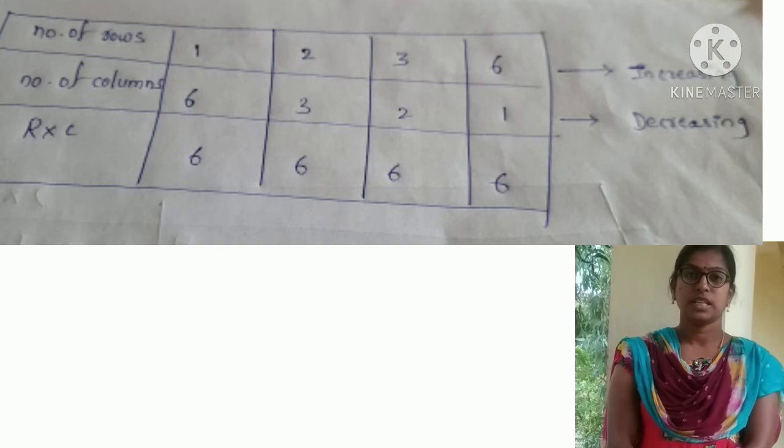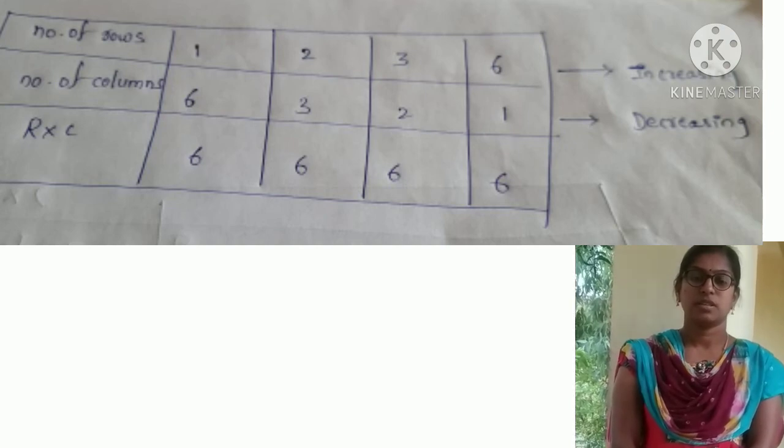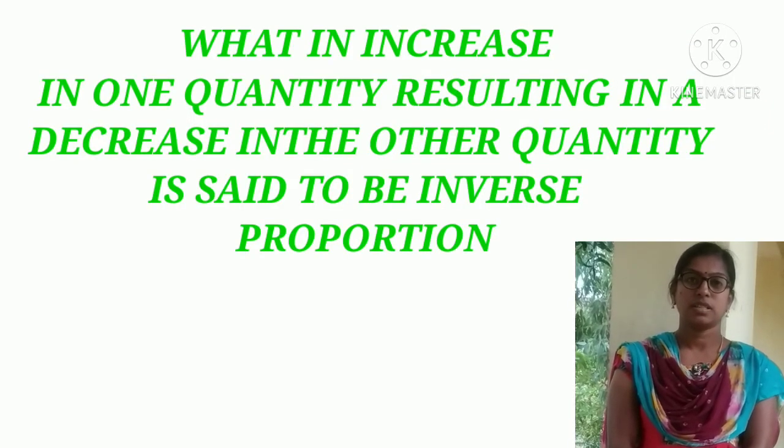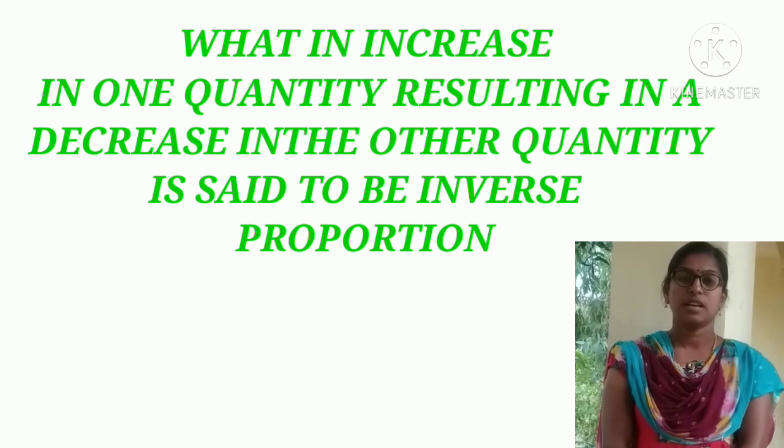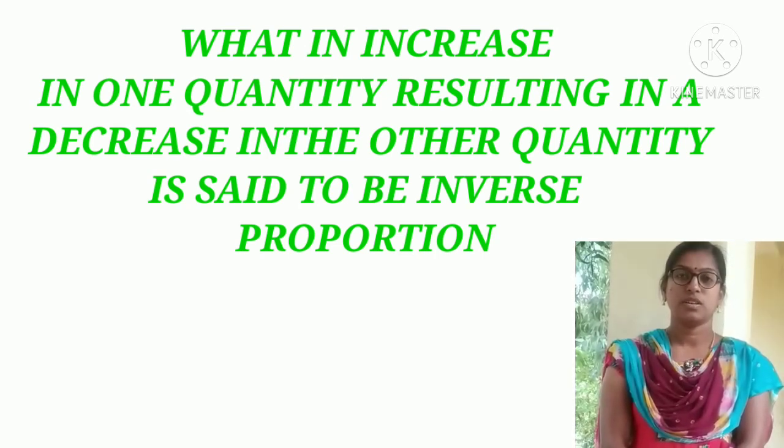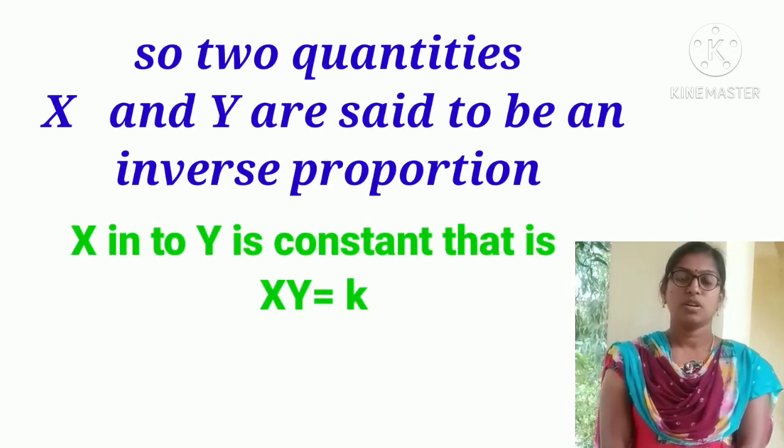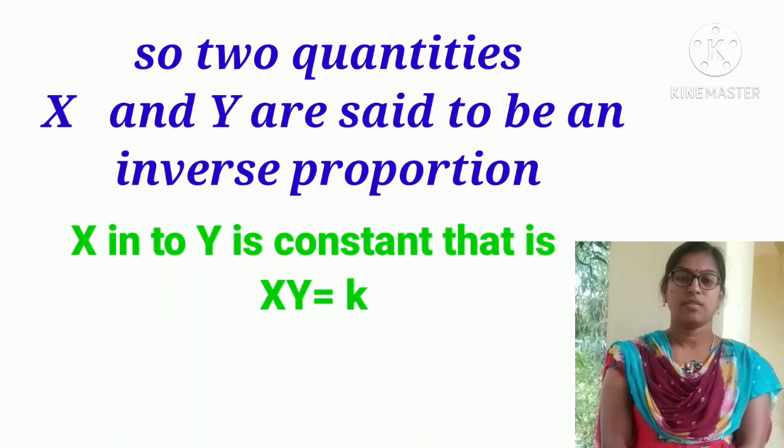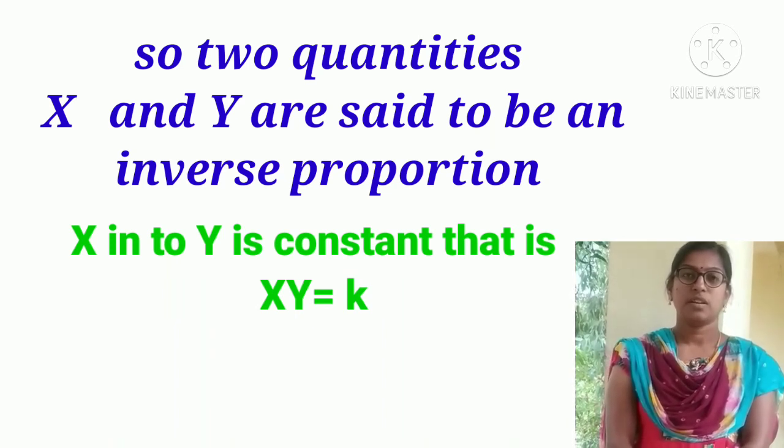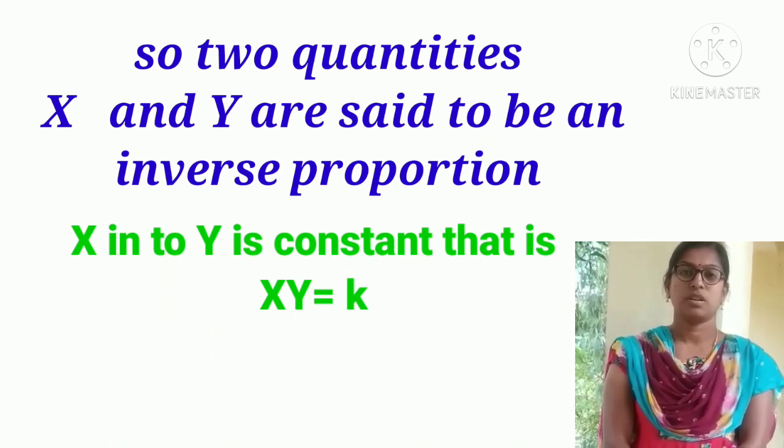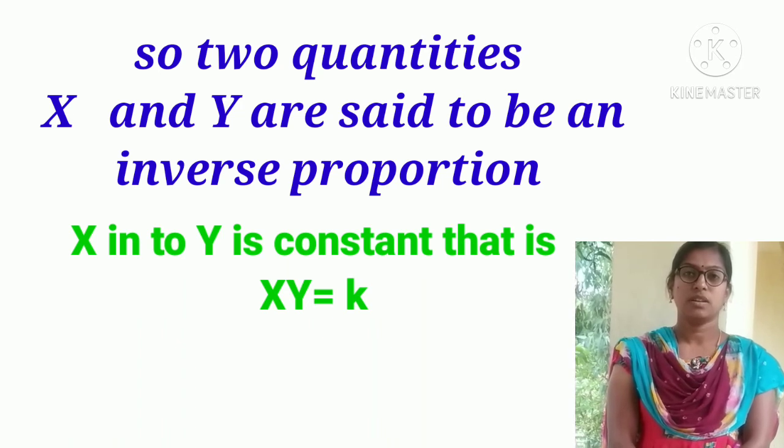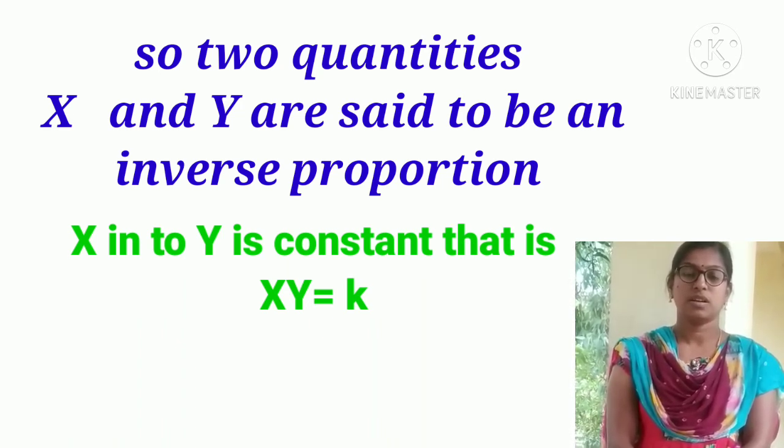We saw that as one quantity increases, the other quantity decreases. Such variation, where an increase in one quantity results in a decrease in the other quantity, is said to be inverse proportion. So two quantities X and Y are said to be in inverse proportion when X times Y is constant, that is, XY equals K.